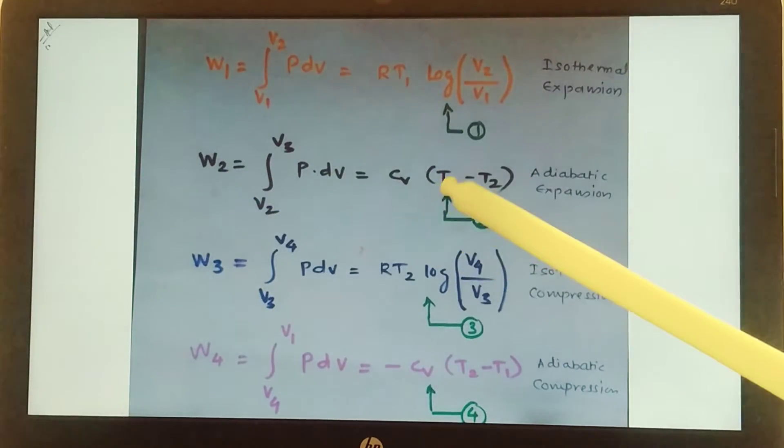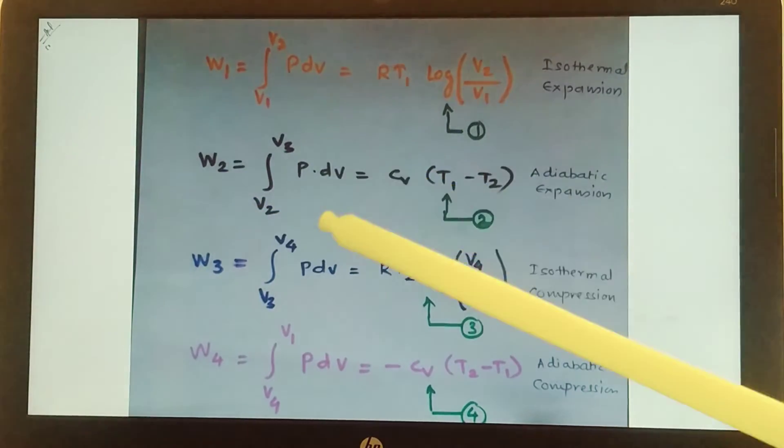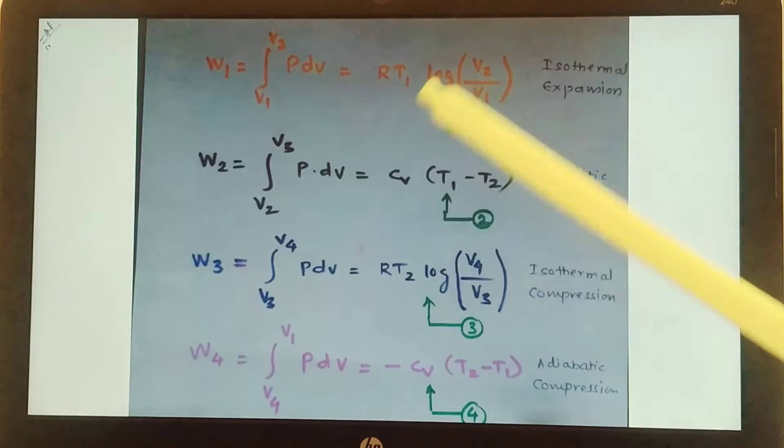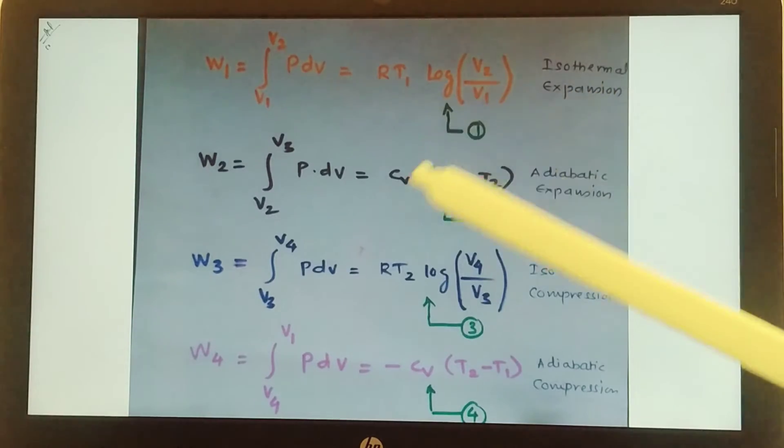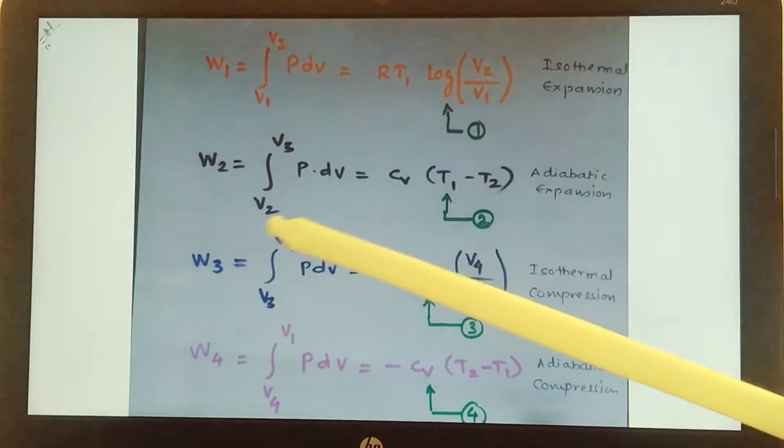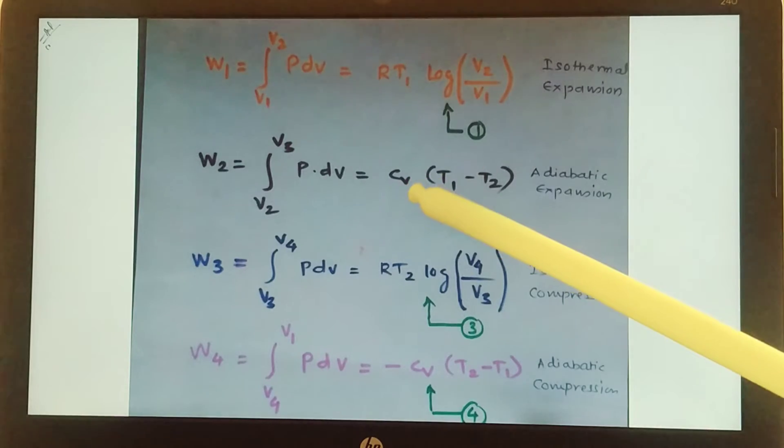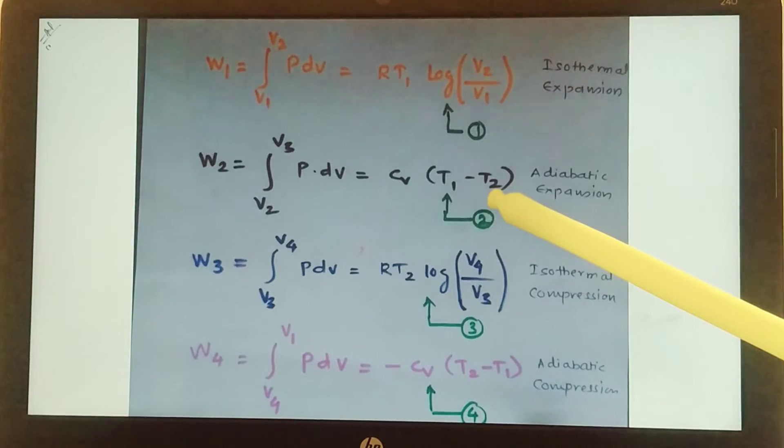I am not going into detail how it is coming. You already know this aspect from 12th standard derivation of isothermal and adiabatic processes, so I am directly writing it. So W2 comes out to be equal to Cv T1 minus T2, where Cv is the specific heat at constant volume, T1 is the temperature of source, and T2 is the temperature of sink.